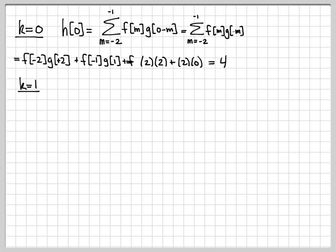I'm going to do similar things for k equal 1. For k equals 1, I take the sum from the previous slide and replace all the k's with 1. I can write this out really as the sum of two different pieces. The m equals minus 2 term: when m is equal to minus 2, I have f of minus 2, g of 1 minus minus 2 is 1 plus 2 or 3, plus the next part is f of minus 1 times g of 2.